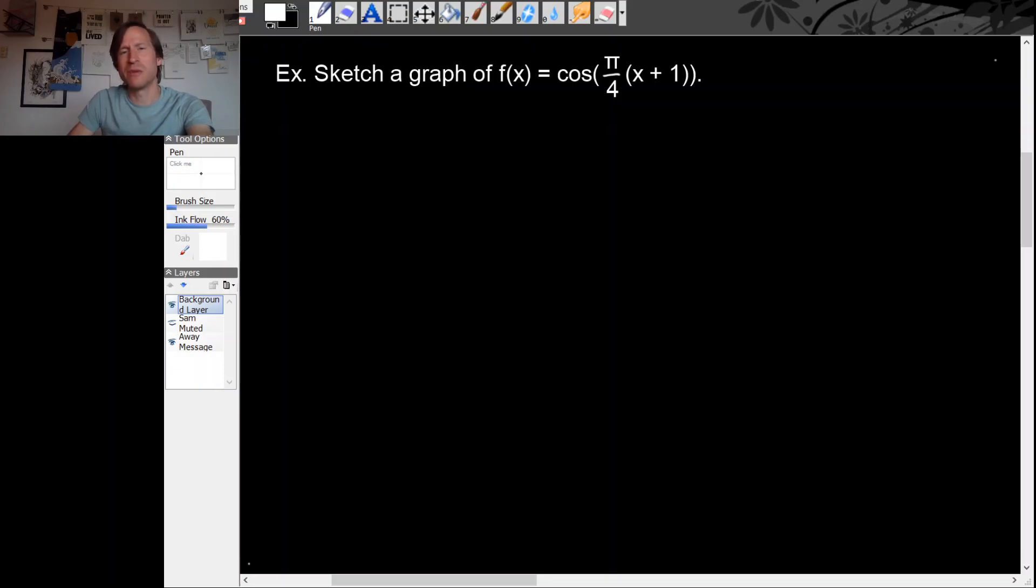There's a common mistake people make when sketching the graph of trigonometric functions that have a horizontal shift and a stretch, and it has to do with the order of the shift and the stretch.